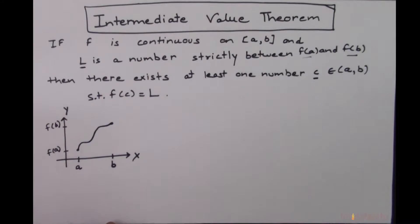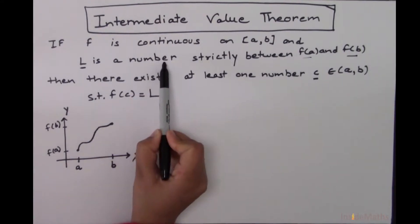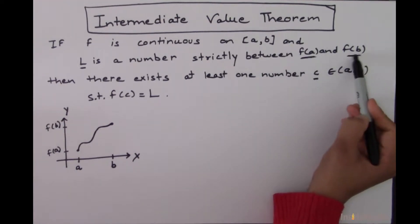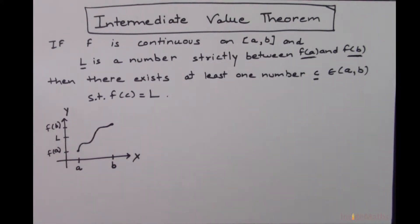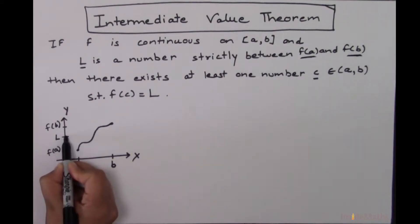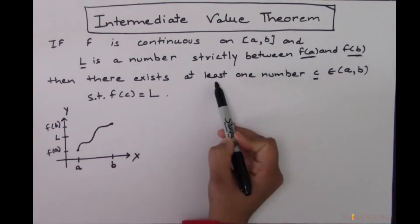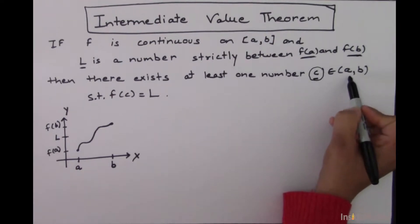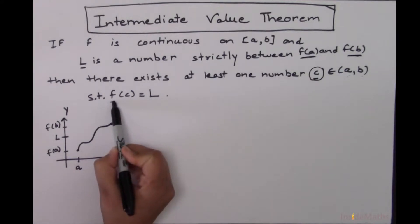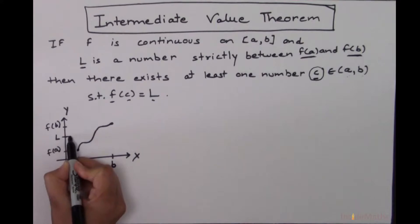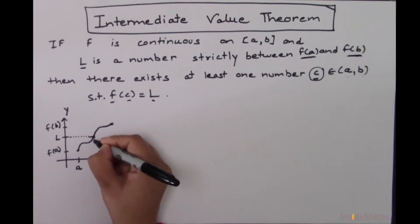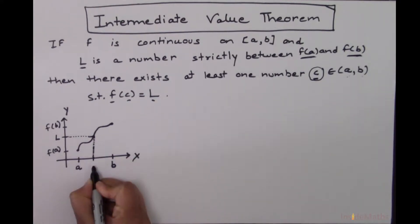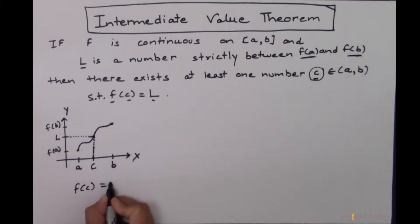The second condition is that L is a number which is strictly between f of a and f of b — so L will be somewhere here, between f of a and f of b. Let's say this is L. Then, corresponding to this L, there must exist at least one number c in the open interval a to b such that the function is defined at that point. If I draw a horizontal line corresponding to L, there is a point c on the x-axis such that f of c equals L.